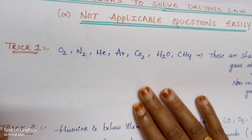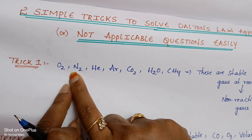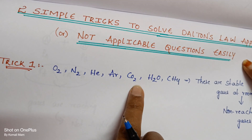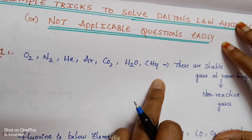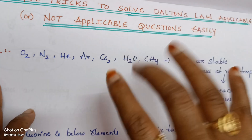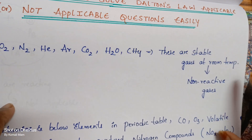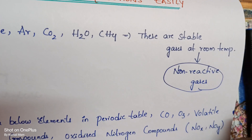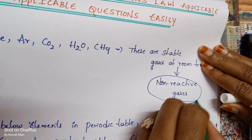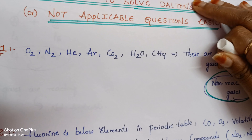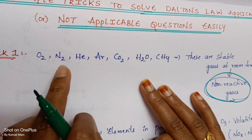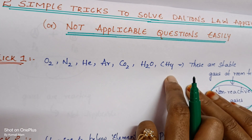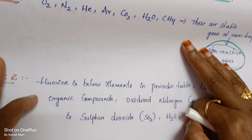Trick number one: O2, N2, helium, argon, carbon dioxide (CO2), H2O, and methane (CH4) — these are very stable gases at room temperature and are non-reactive gases. Write these in your notebook: O2, N2, helium, argon, CO2, H2O, CH4 — these are non-reactive gases.